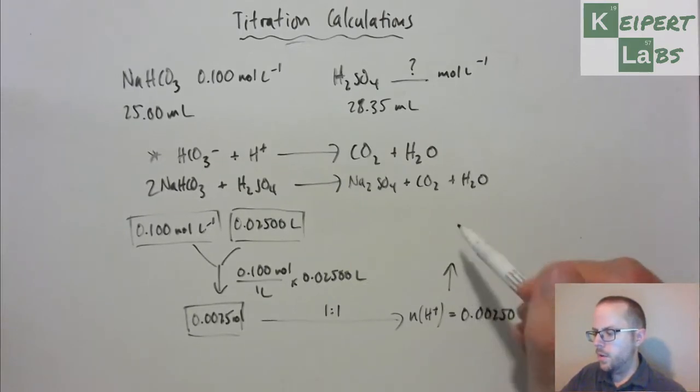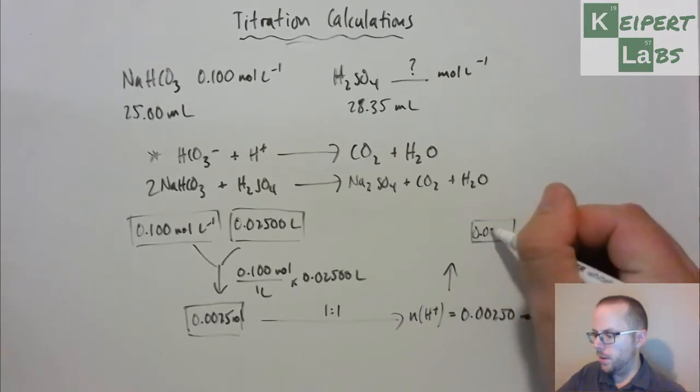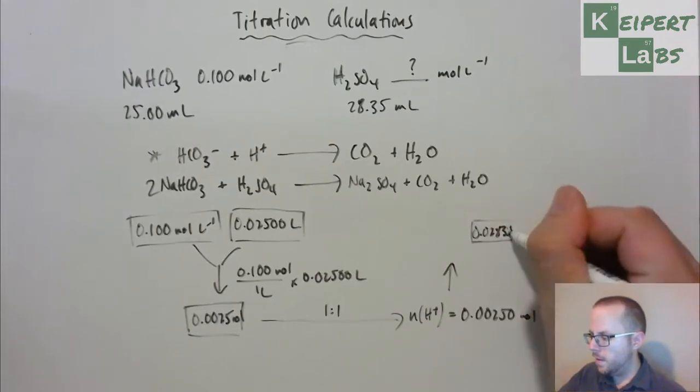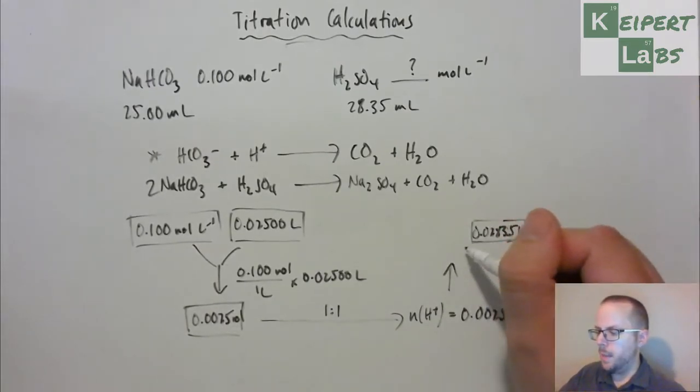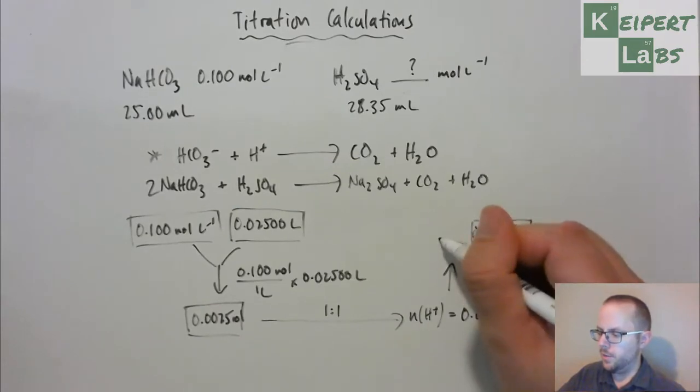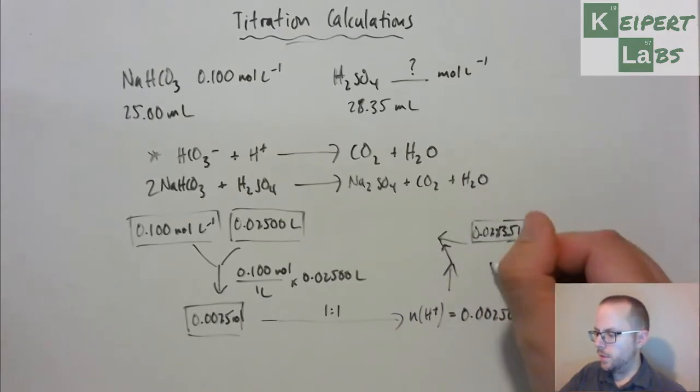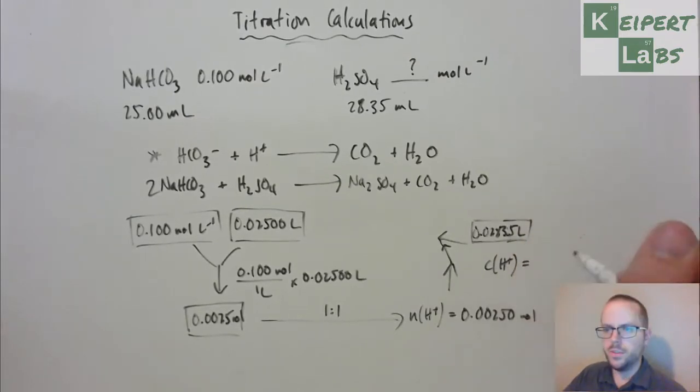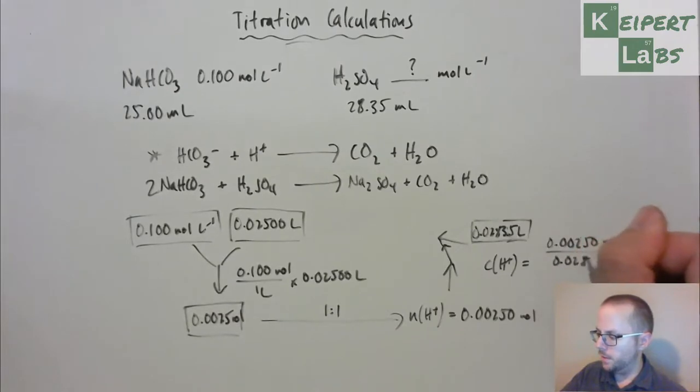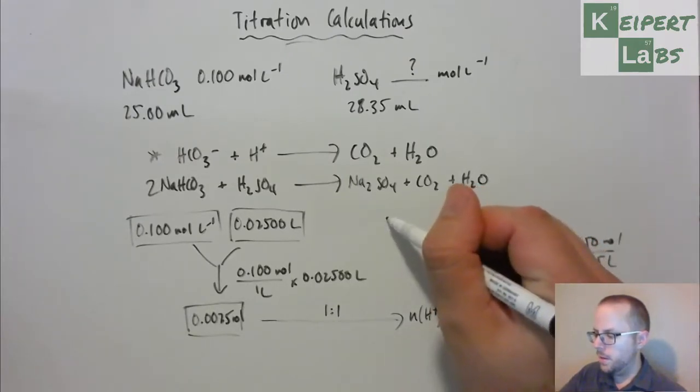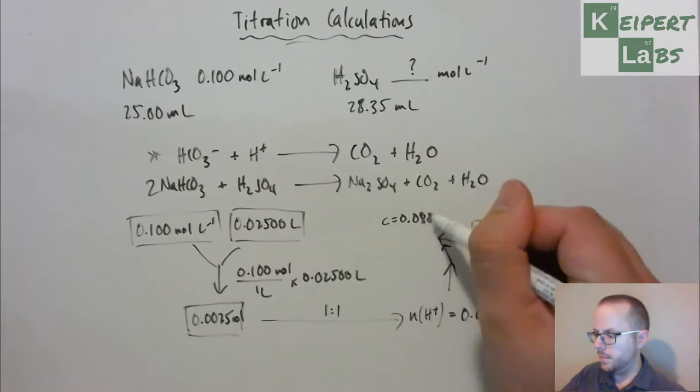So now what I want to do is with the volume that I have over here of 28.35 mils or 0.02835 litres, I want to be able to turn that into a concentration. And so in order to do that, my concentration of H+ is equal to 0.00250 moles divided by 0.02835 litres. And so what I get is a concentration of 0.088 something something moles per litre.